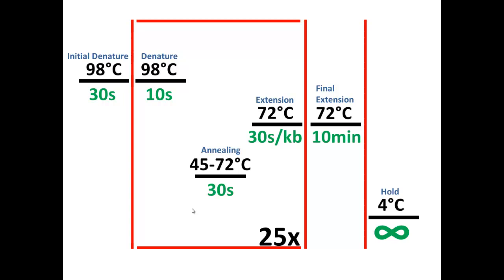The other variable point is the extension time. Now do not overlook this. For example, amplifying a plasmid will take a much longer time than a 700 base pair fragment. Generally you want to go 30 seconds for every thousand nucleotides. Alrighty then, let's go ahead and now look at some scenarios for troubleshooting.